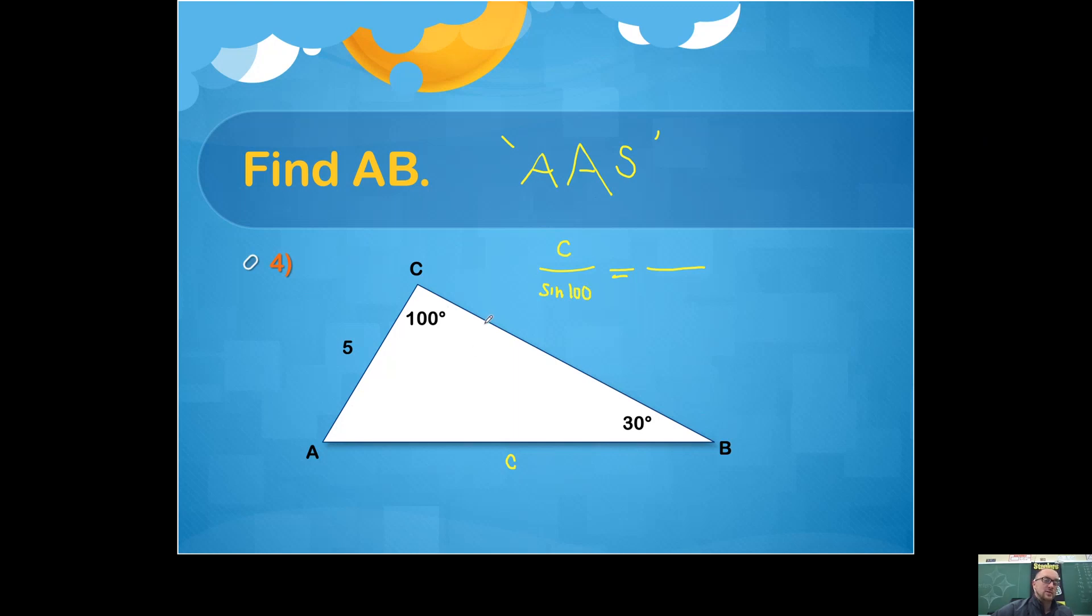Now, whatever that ratio is, it's got to equal the same thing as this ratio. So you have that side length of 5. Notice how that's across from an angle that's 30 degrees. So a side length over the sine of the angle opposite of it is always equal to any other side length over the sine of the angle opposite of it.